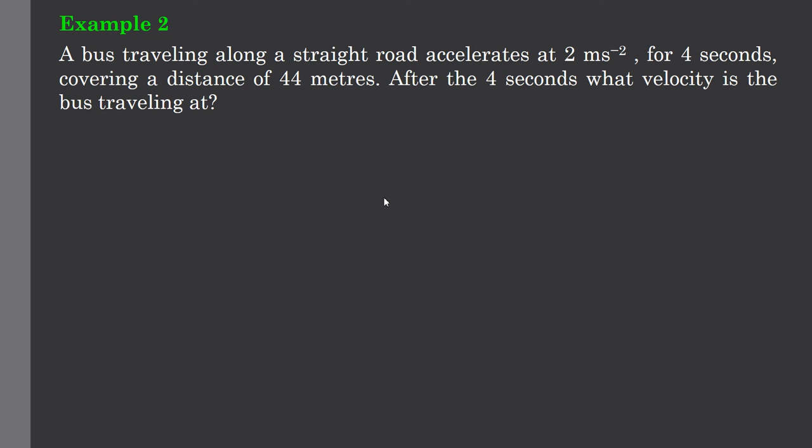Example number two, a bus travelling along a straight road accelerates at 2 meters per second per second for 4 seconds, covering a distance of 44 meters. After the 4 seconds, what velocity is the bus travelling at? So again, think of this as a start and a finish and somewhere in the middle we've got this constant rate of acceleration.